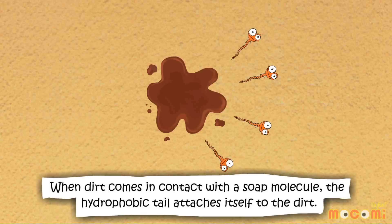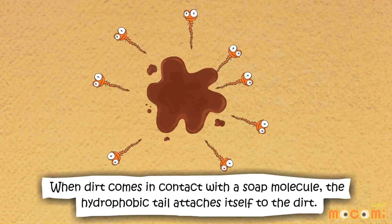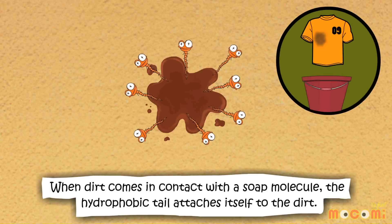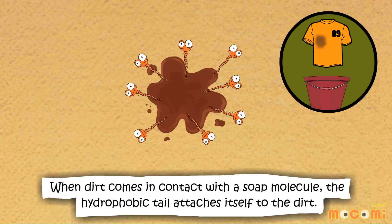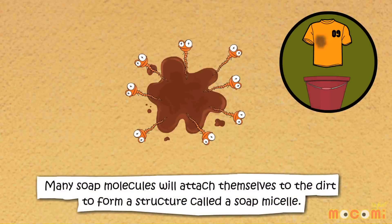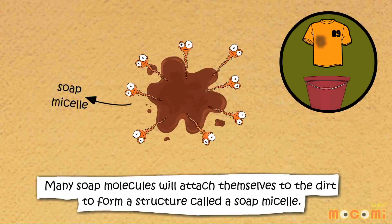When dirt comes in contact with a soap molecule, the hydrophobic tail attaches itself to the dirt. Many soap molecules will attach themselves to the dirt to form a structure called a micelle.